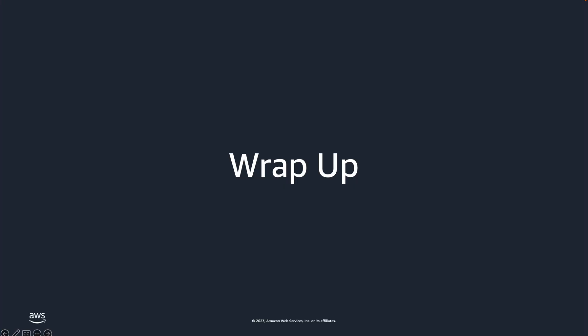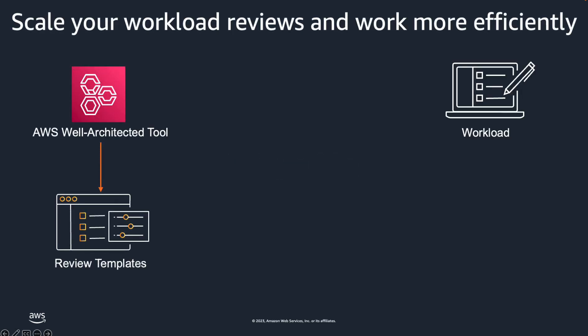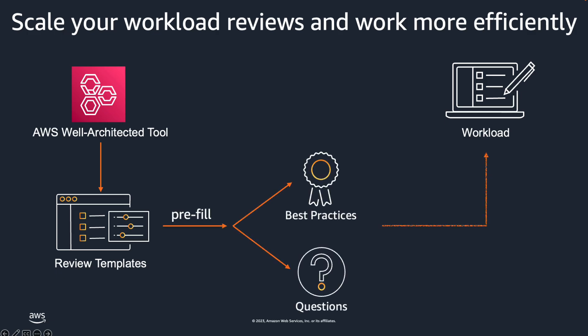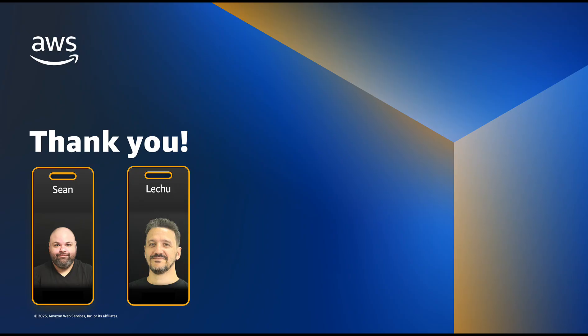And that's it for today's presentation on the new review templates feature in the AWS Well-Architected Tool. Let's do a quick recap. With the new Well-Architected Tool review templates feature, you can scale your workload reviews and work more efficiently. This feature eliminates the need to repeatedly answer the same questions for your common workloads, making the review process smoother and allowing you to optimize your resources more efficiently. The sharing feature also promotes consistency and standardization of best practices across workloads and multiple teams, enhancing scalability, efficiency, and alignment in your reviews. Start creating your own review templates and share them with your team. Thank you!